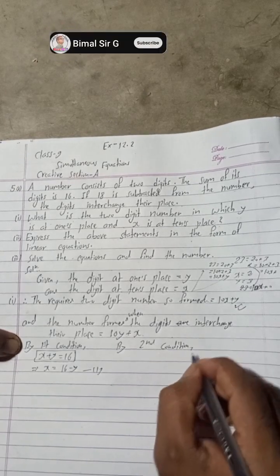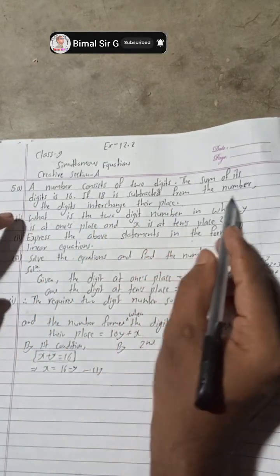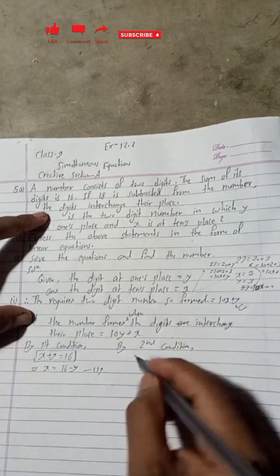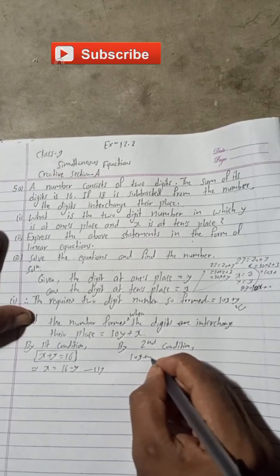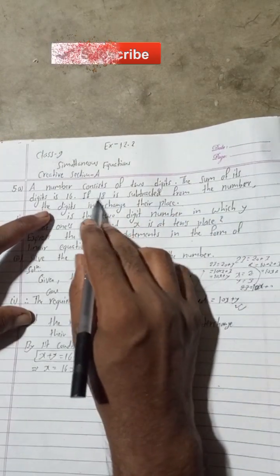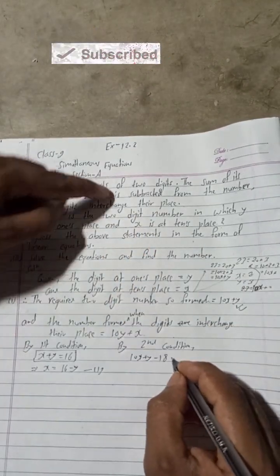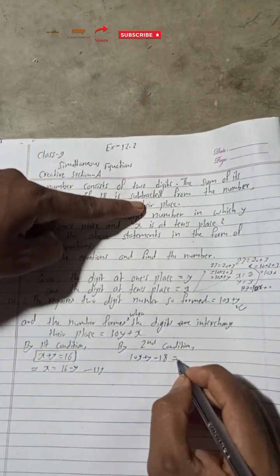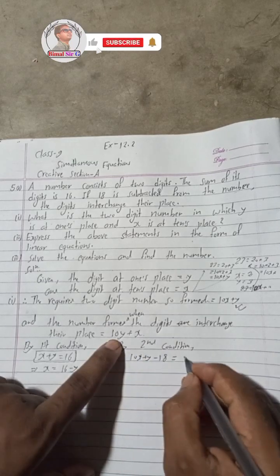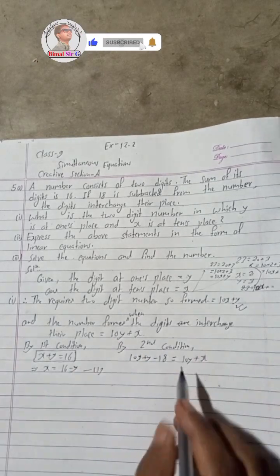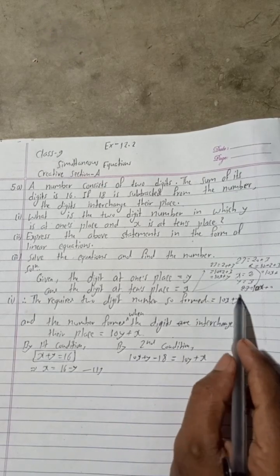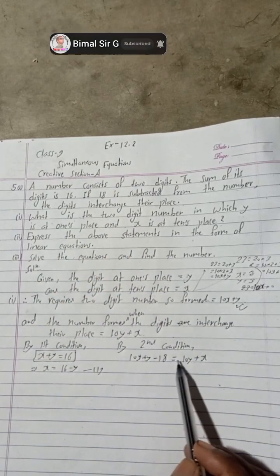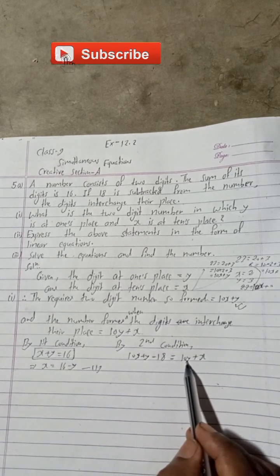By second condition: if 18 is subtracted from the number, the digits interchange their place. The number is 10x plus y. So 10x plus y minus 18 equals 10y plus x. Solving: 10x minus x plus y minus 10y equals 18, which gives 9x minus 9y equals 18.